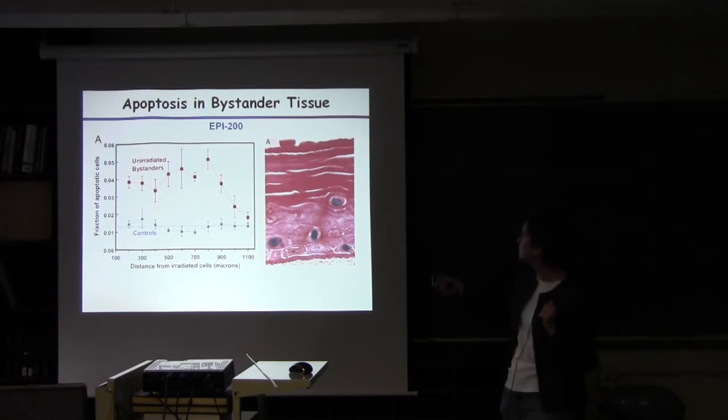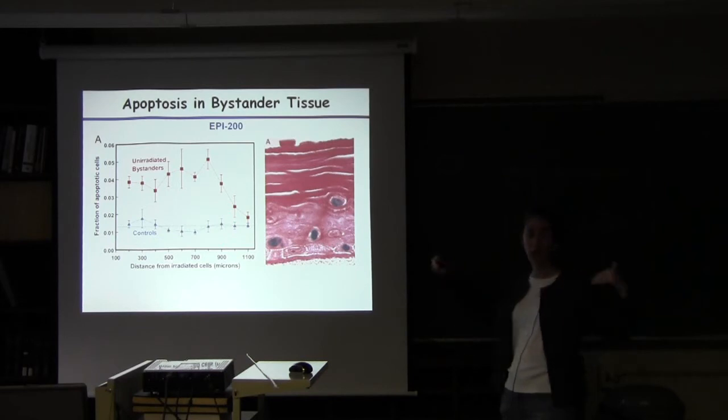And in this case we really see elevated levels of apoptotic cells in bystanders out to 800 microns and gradually starts dropping down but really convincingly and actually statistically different levels. I think the statistical significance I think maintains through 1 millimeter away from the tissue.